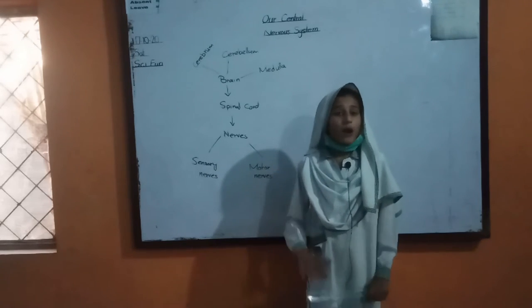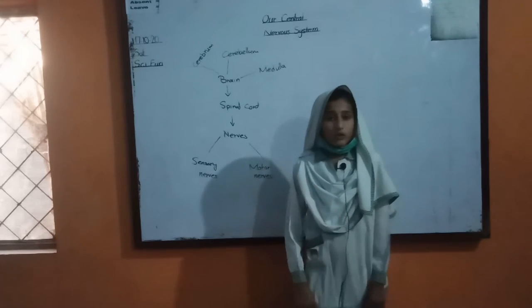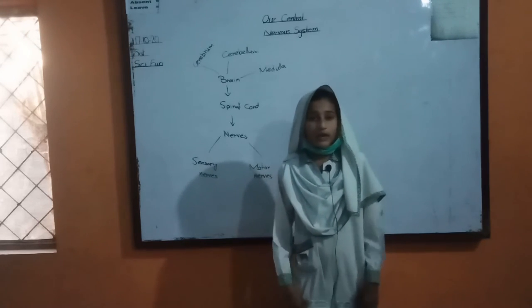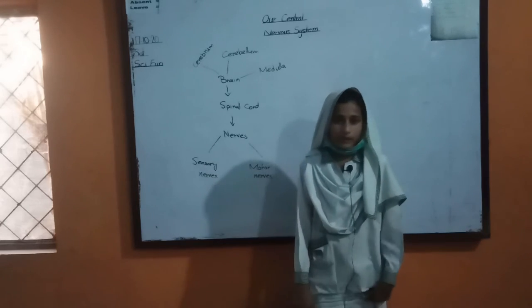Now I will tell you about the medulla. Medulla is the smallest part of our brain. It controls involuntary action — for example, heartbeating.